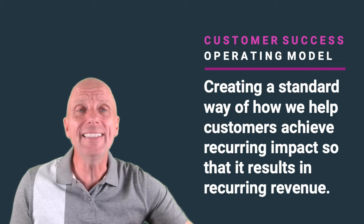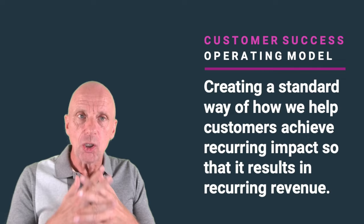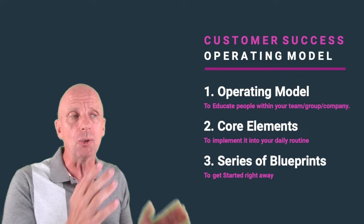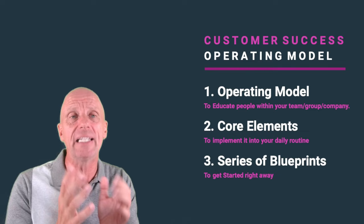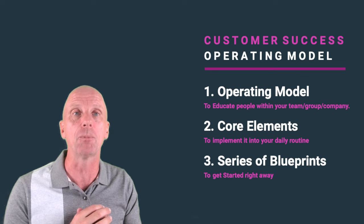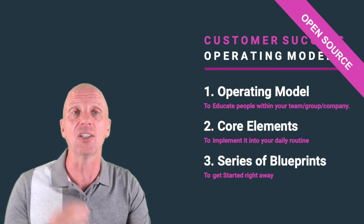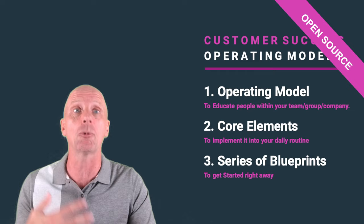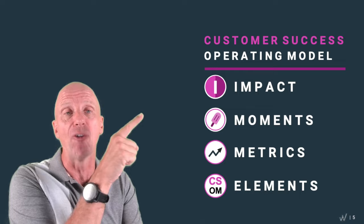What is this thing, and why do we need it? What we're looking for today is a standard on how recurring revenue businesses can work. At the end of this session, I'm going to leave you with an operating model you can immediately use, with core elements you can implement in your business, plus a series of downloadable blueprints. All of this is available as open source — you can download it, use it, and when you publish it, please attribute Winning by Design.